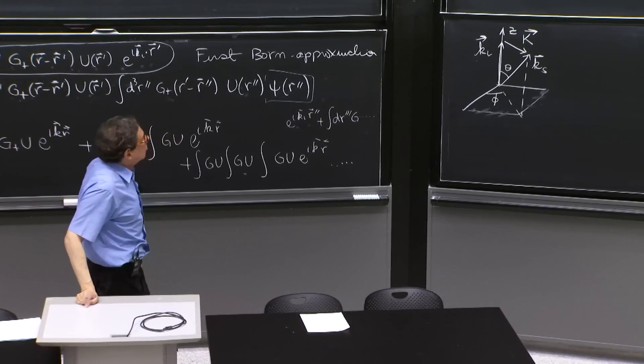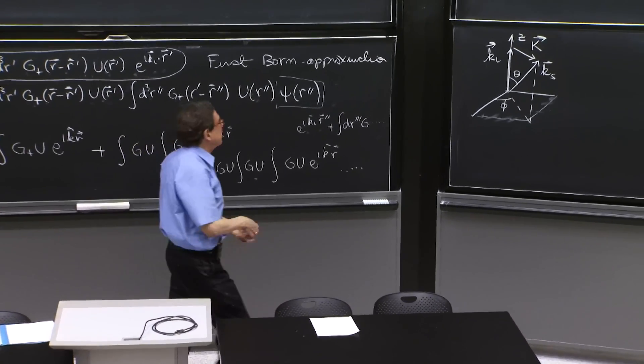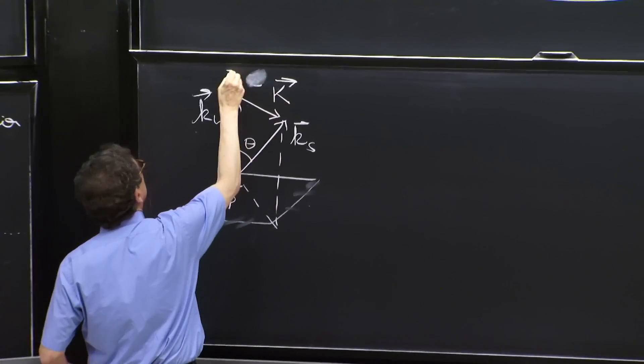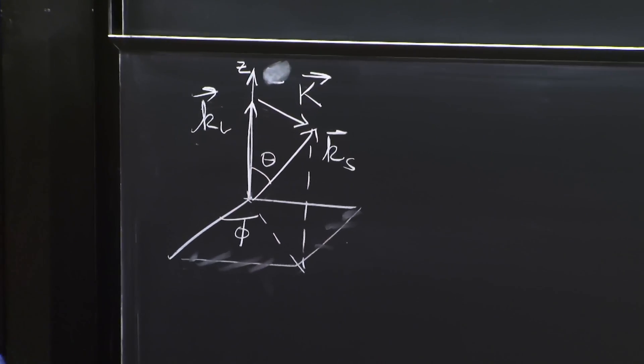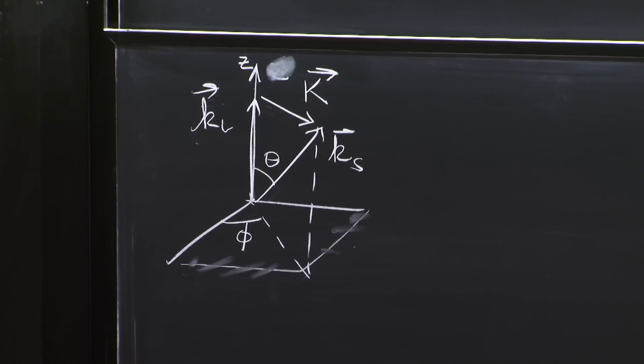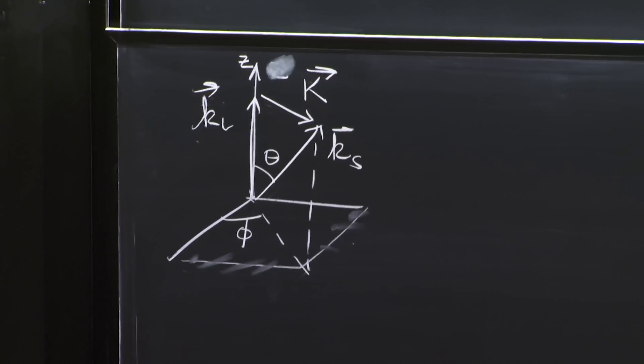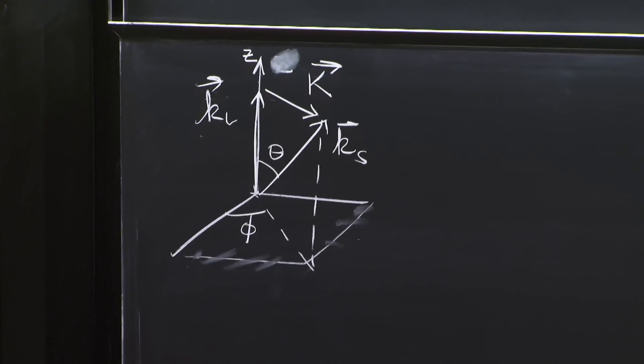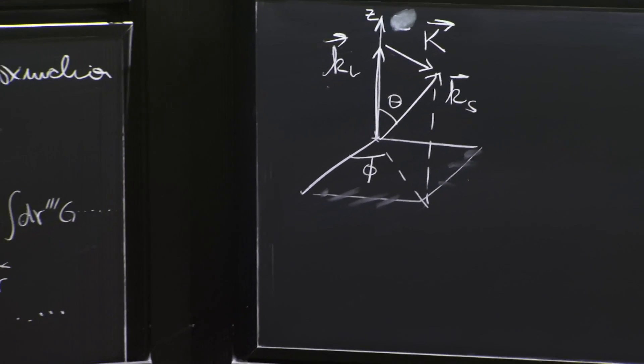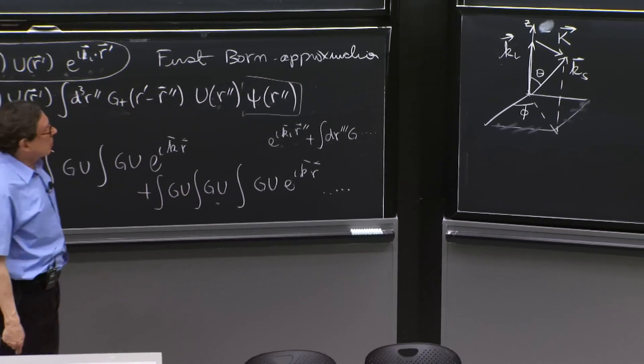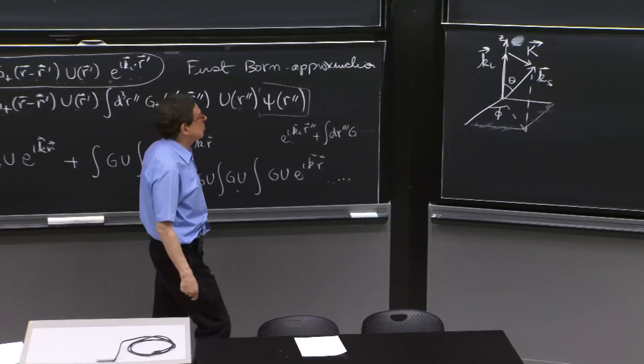So this vector, capital vector k, it's a little cluttered here. Let me put the z in here. That vector is over there. And that vector is a complicated vector, not so easy to express in terms of ki and ks, because it has a component down. But it has an angle phi as well.